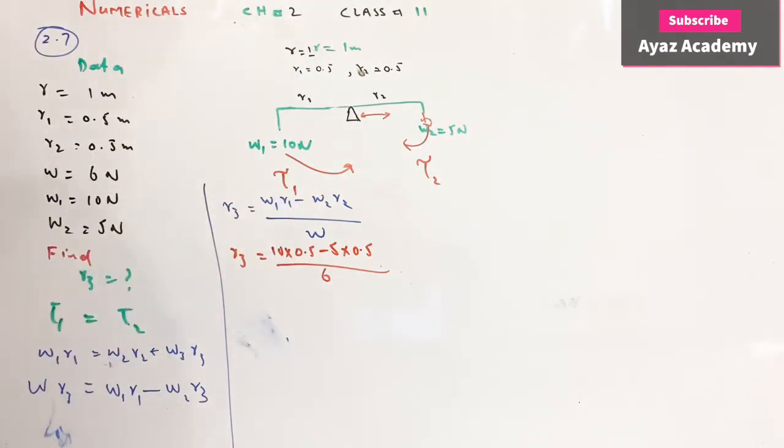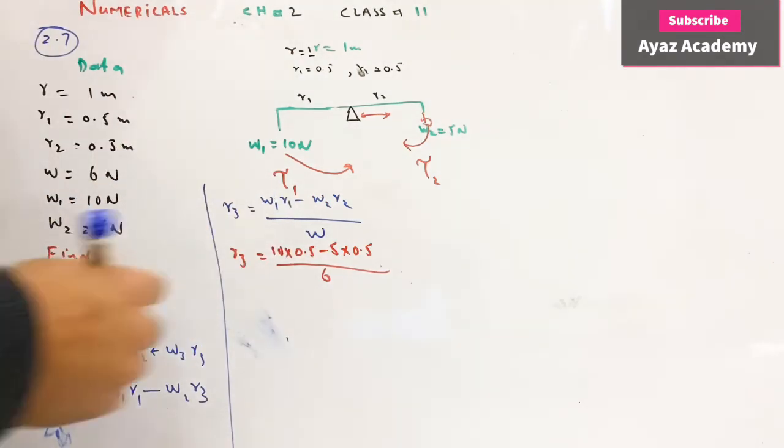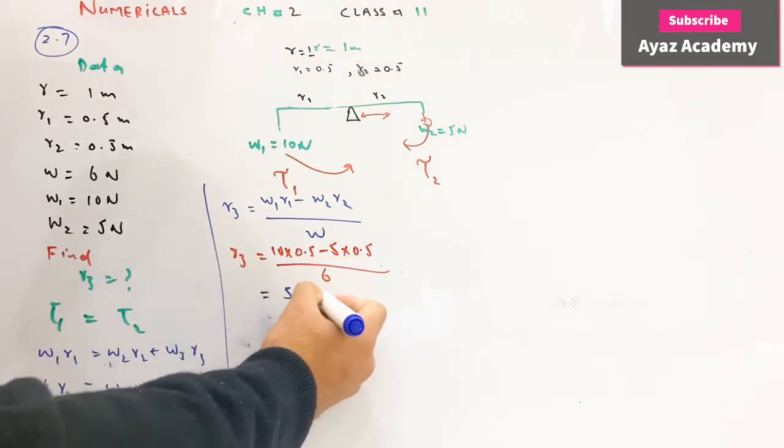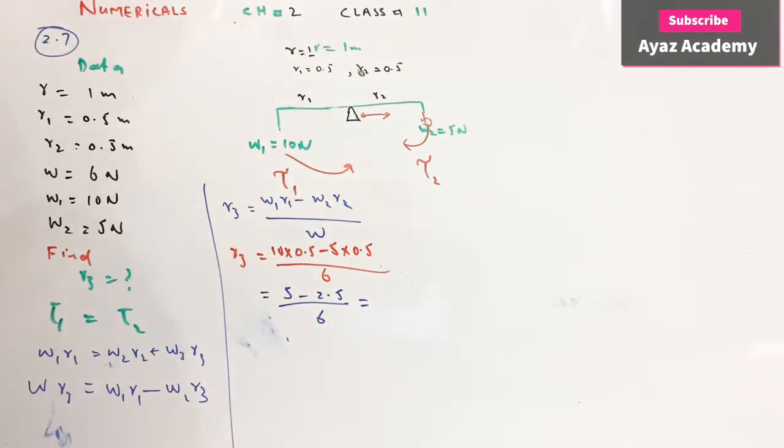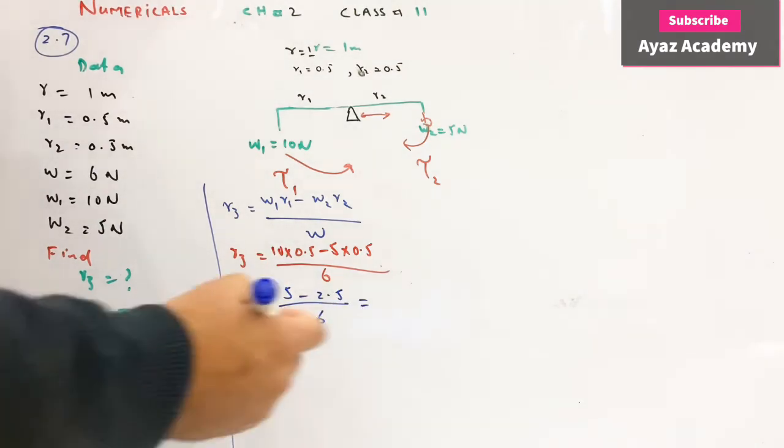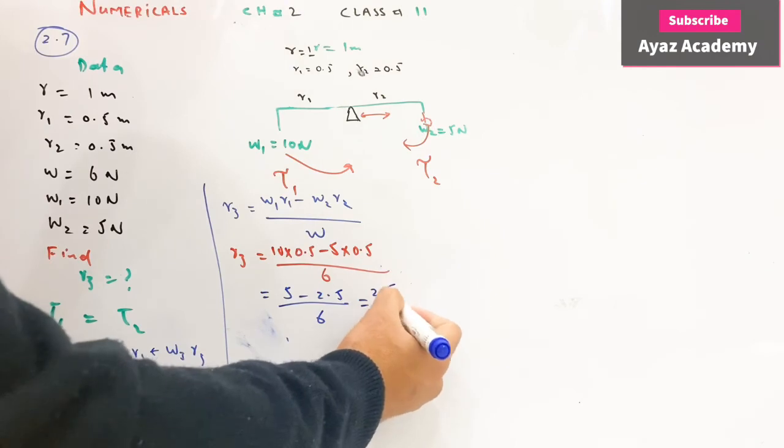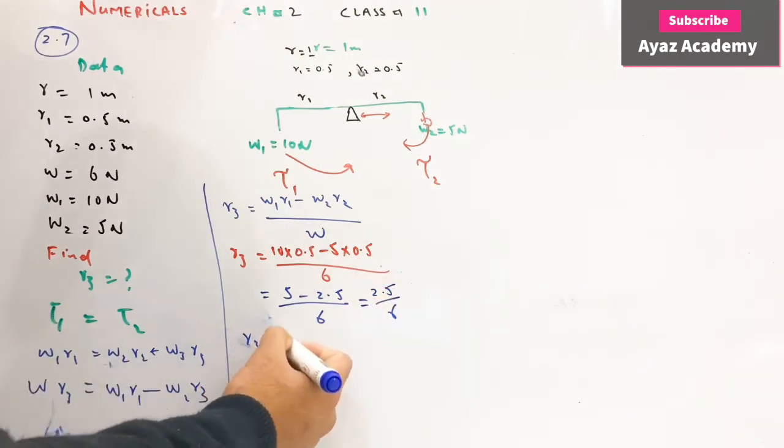R3 equal ho jayega, in dono ko multiply karke kya aayega? 5 minus 2.5 divided by 6. Is se aayega 2.5 divided by 6. R3 equal ho jayega.